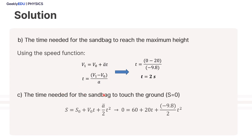For the time needed for the sandbag to touch the ground: when it touches the ground, the position is zero. Using the space function for accelerated motion, we have the final position as 0, initial position as 60, initial velocity as 20, and the acceleration. Solving this equation gives two results: t equals negative 2 and t equals 6. Since we're dealing with time, there is no negative time, so the real solution is t equals 6 seconds.